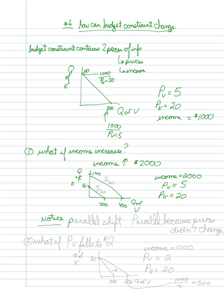Here it is a parallel shift, parallel because the prices didn't change. Nothing about the prices changed. The price ratio is still 5 over 20 and 5 over 20.